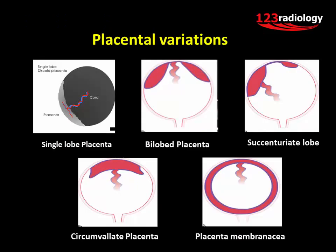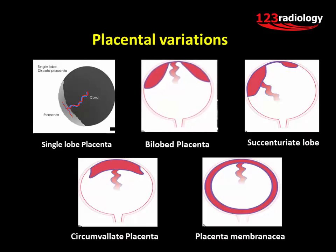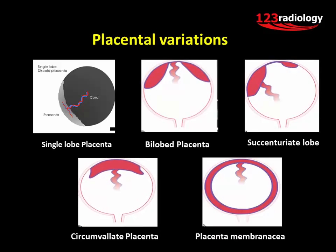Several variations in placental morphology are seen. These include single-lobed discoid placenta — the most common scenario — bilobed placenta, succenturiate lobe, circumvallate placenta, and placenta membranacea.